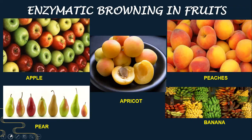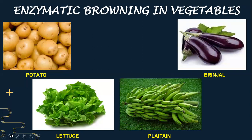Fruits which undergo enzymatic browning include apples, pear, apricots, peaches, and banana. The vegetables which undergo enzymatic browning are potatoes, lettuce, plantain, and brinjal. These are all the vegetables which undergo rapid enzymatic browning.